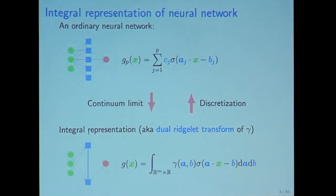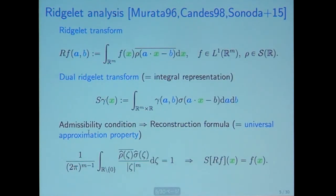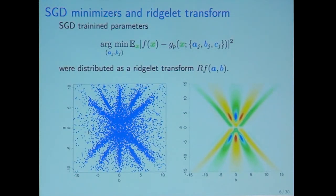Integral representation is a really interesting and profound theory. We reparameterize hidden parameters as integral and introduce Ridgelet analysis. This is a friend of wavelet analysis and Radon transform, used for proof of universal approximation property of neural networks. This is really interesting because SGD minimizers and Ridgelet transform coincide. This is empirical knowledge.